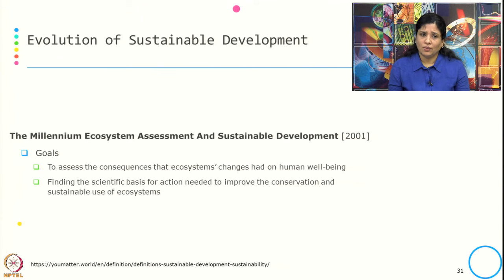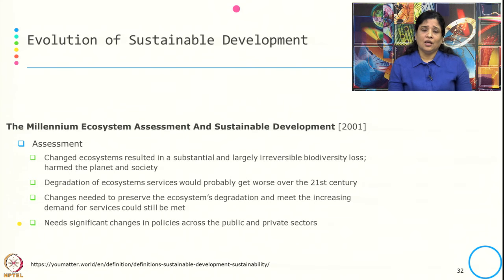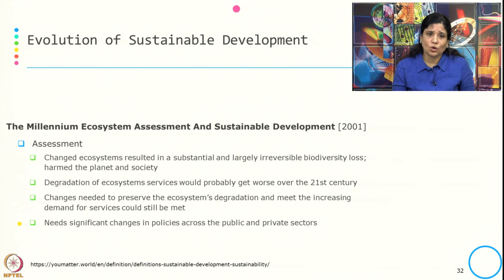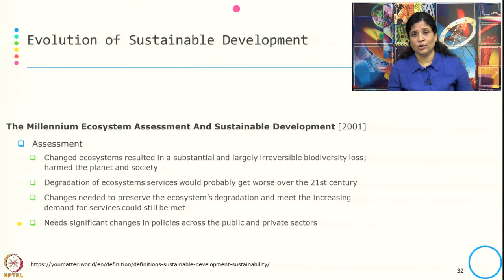In 2001, the Millennium Ecosystem Assessment was established. Its goal is to assess the consequences of ecosystem changes for human well-being and to find the scientific basis for action needed to improve conservation and sustainable use of ecosystems. The assessment covers biodiversity loss, degradation of ecosystem services likely to worsen, and the need for significant policy changes across both public and private sectors to prevent ecosystem degradation and enable efficient ecosystem restoration and conservation.